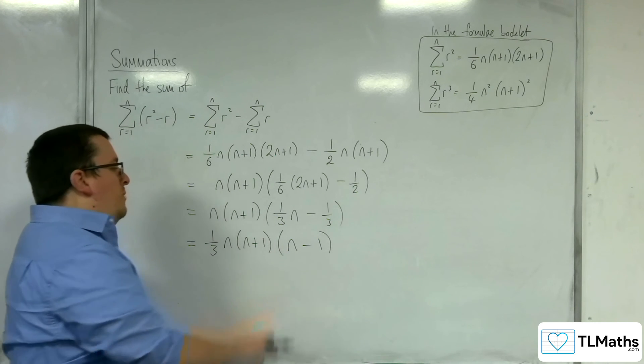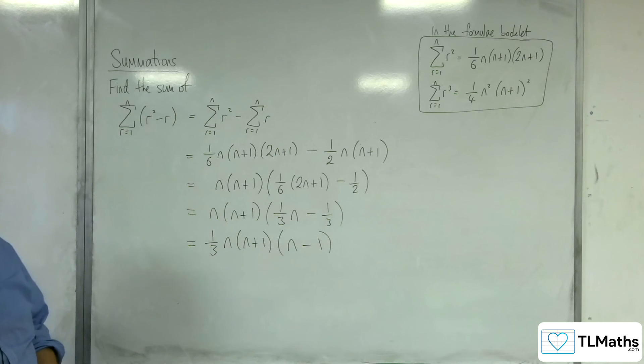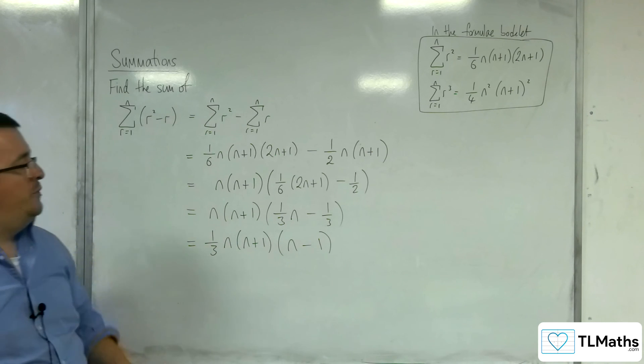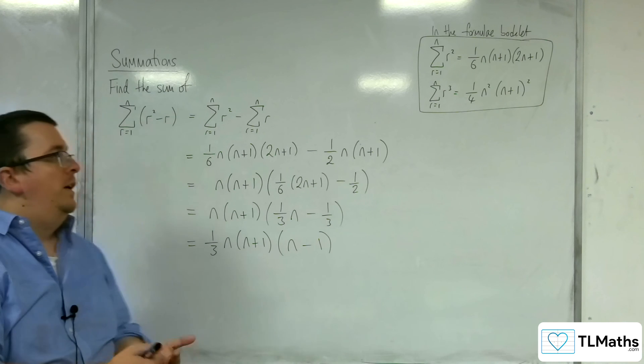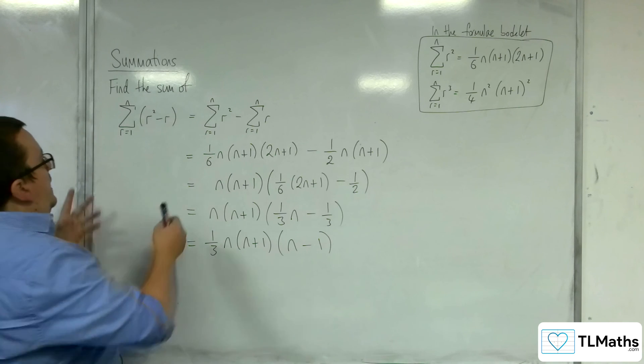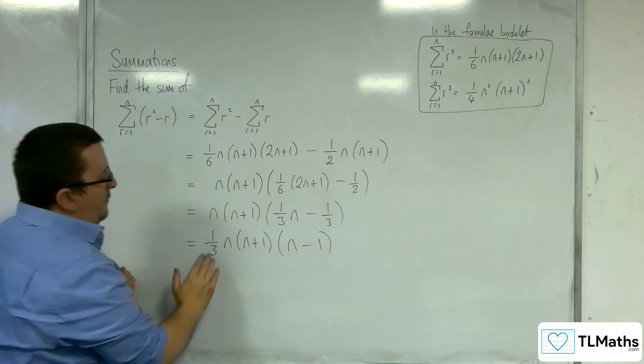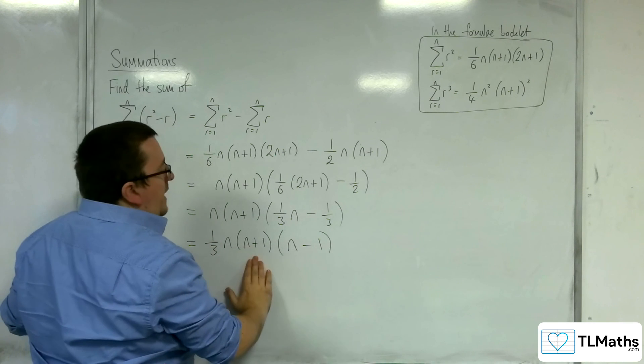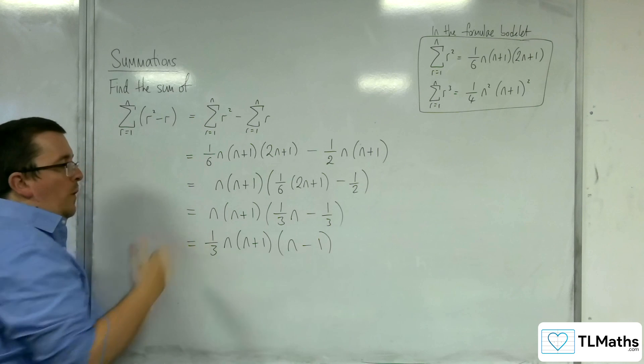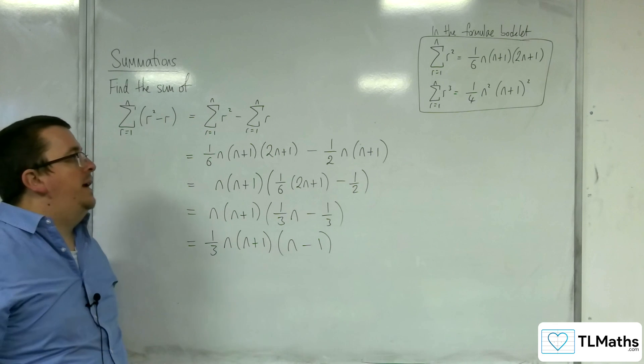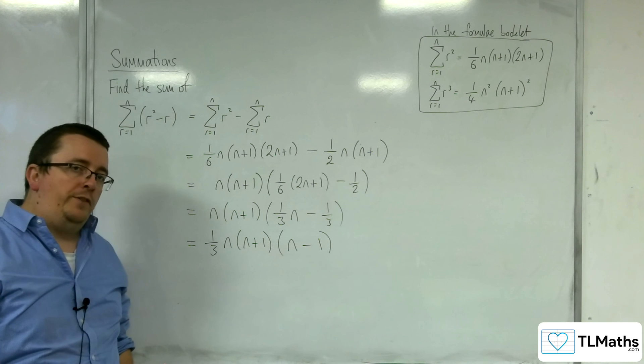You could expand those brackets to get the difference of two squares. You could do that, but it really depends, because the majority of exam questions that you get on this often might say, show that this can be written in the form of k n, n plus 1, n minus 1, where you've got to identify the value of k. So that could be the type of question that you've got to deal with here.